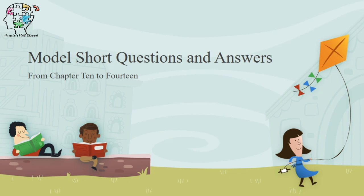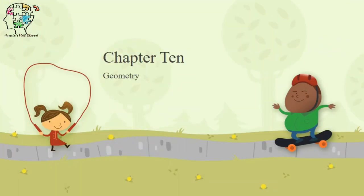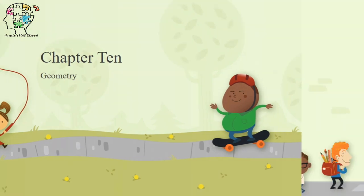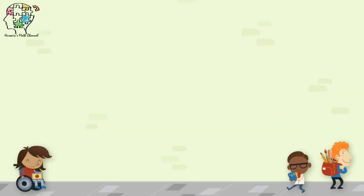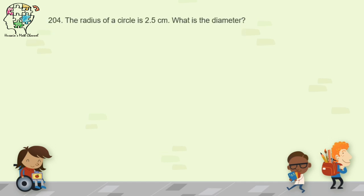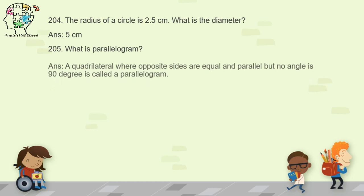Let's begin from Chapter 10, Geometry. In our last class we already finished up to question number 203. Today we will start from question number 204. Question 204 asks: the radius of a circle is 2.5 centimeters — what is the diameter? The diameter is double the radius, so multiplying by 2 gives 5 centimeters.